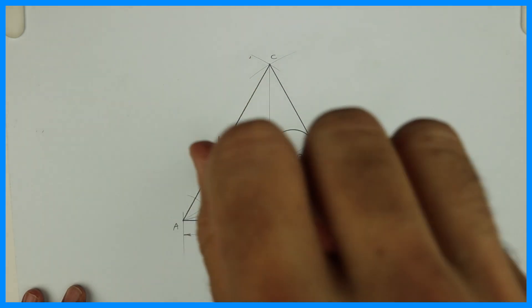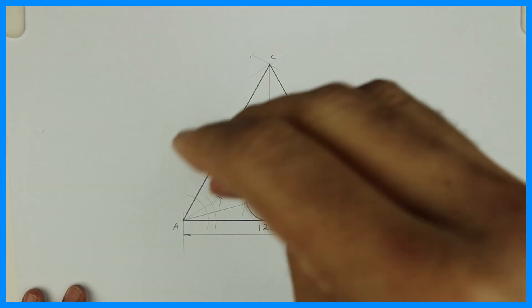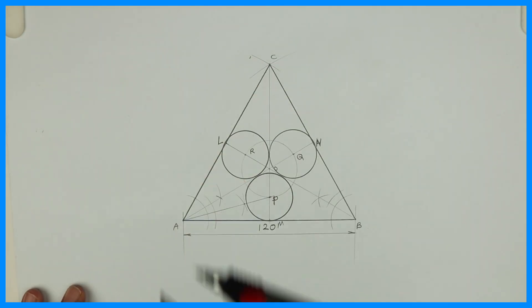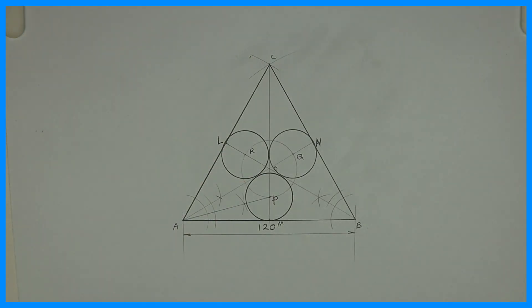So that way we got all three circles which are touching one side of the triangle and two other circles.